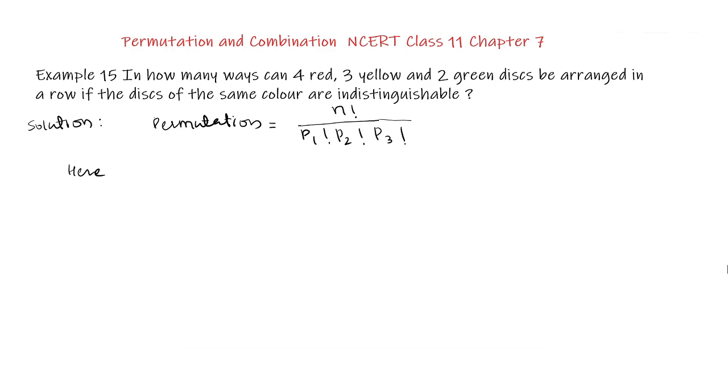So total number of disks is 9. So here n equals 9 and p1 equals 4, that is there are 4 red disks. p2 equals 3, there are 3 yellow disks and p3 equals 2.